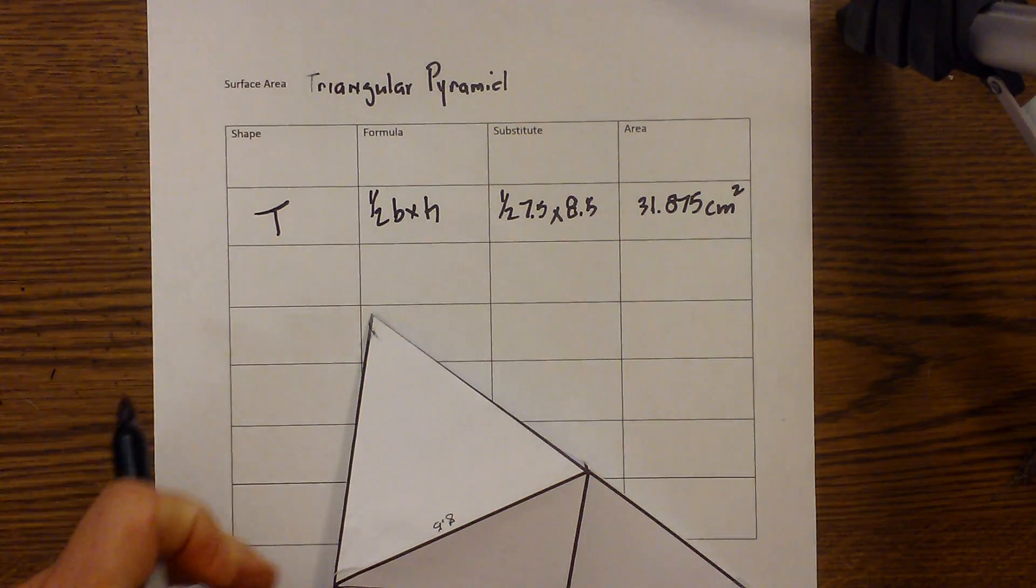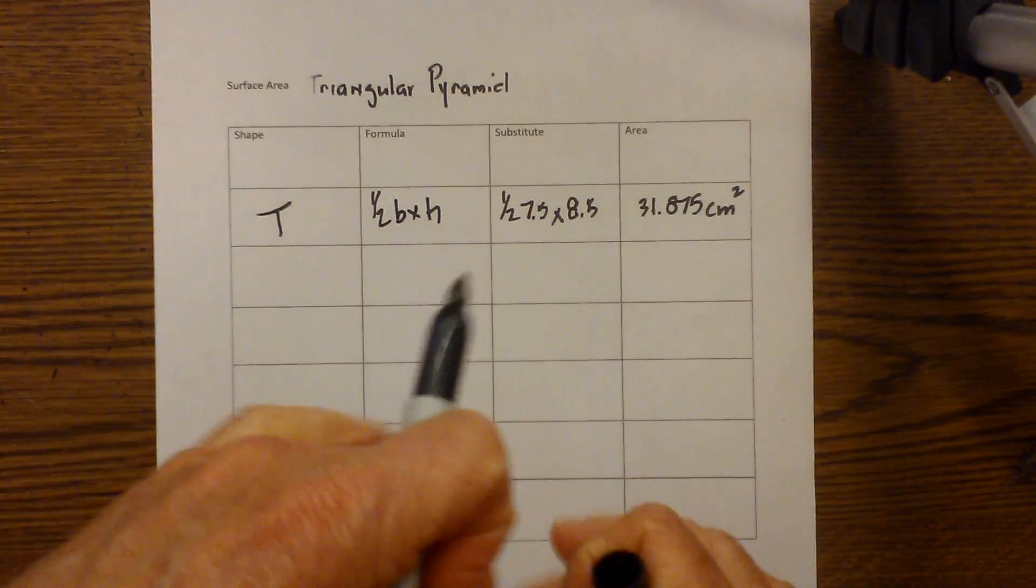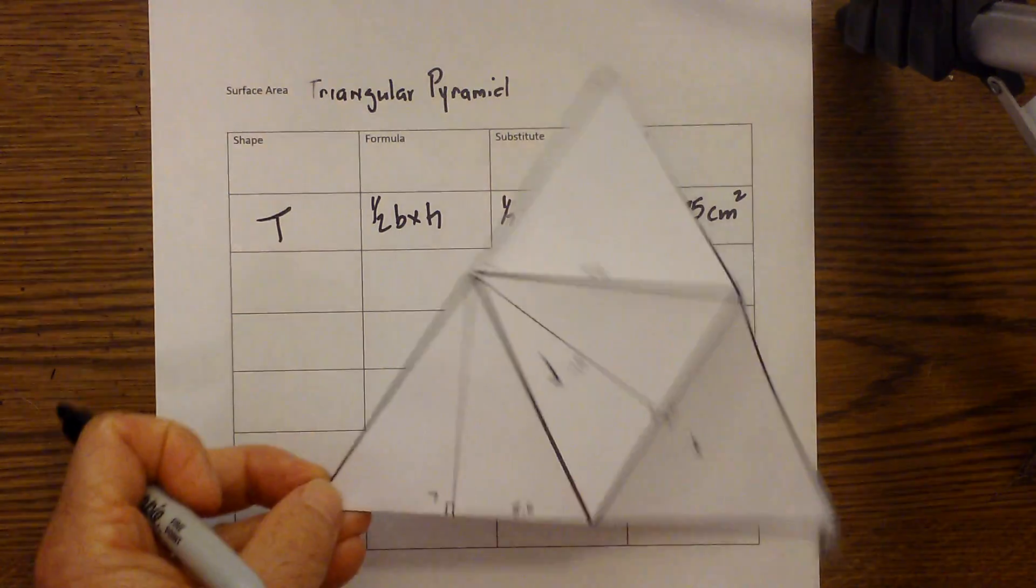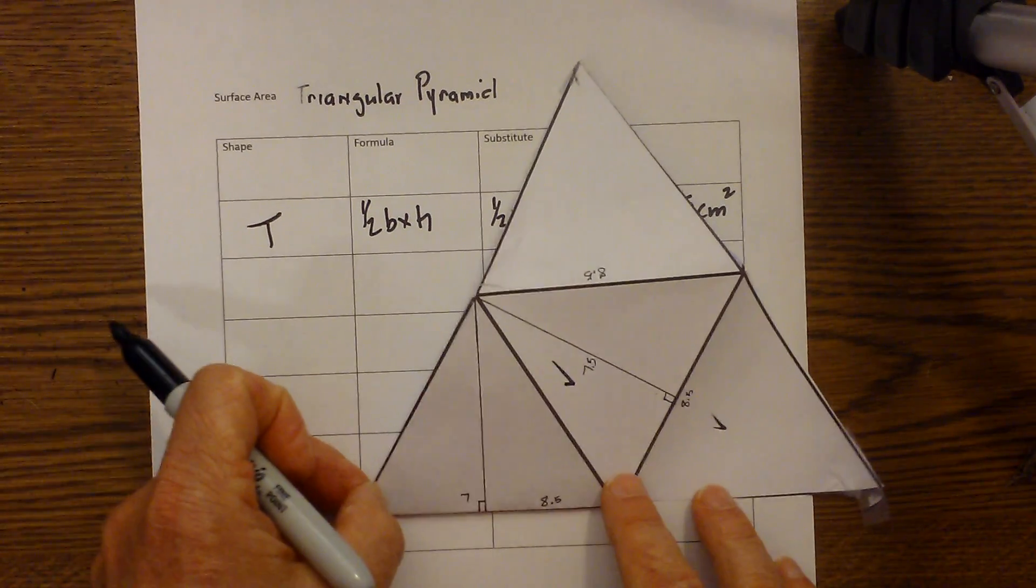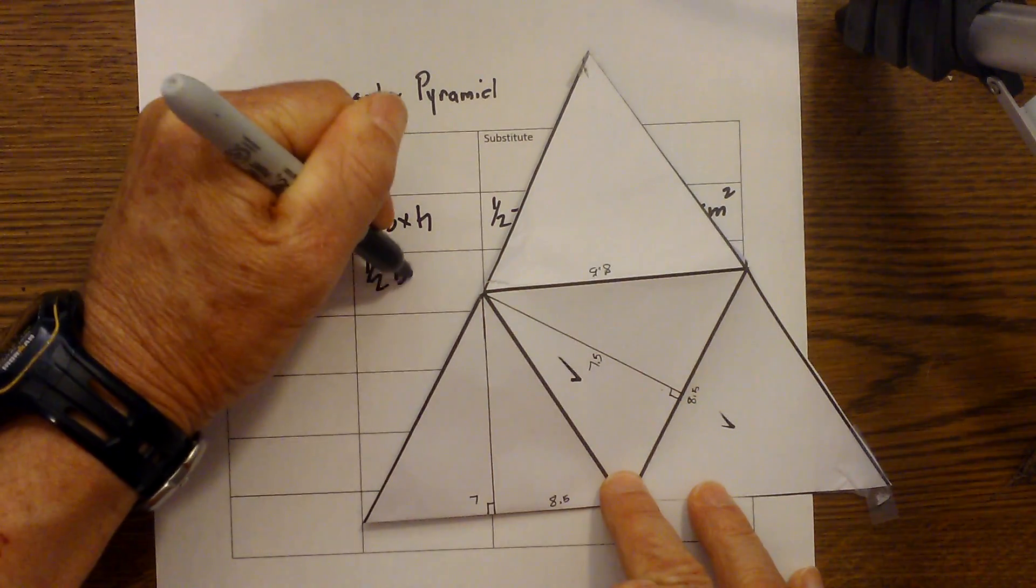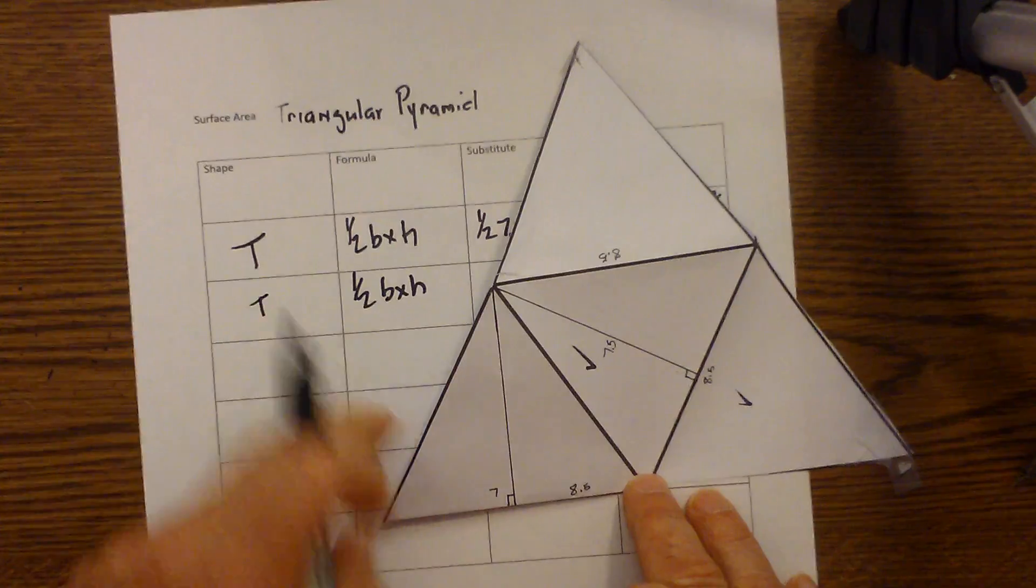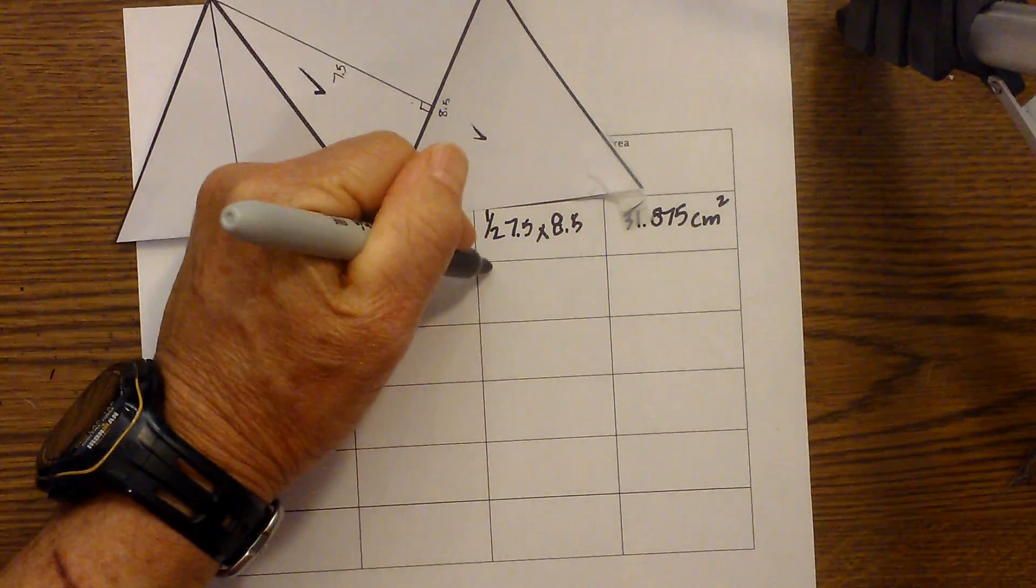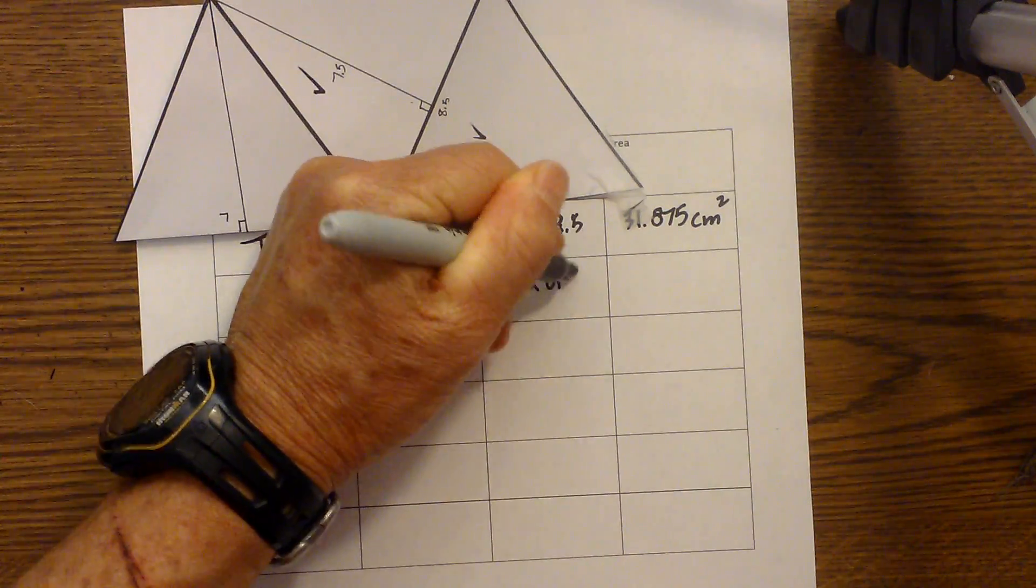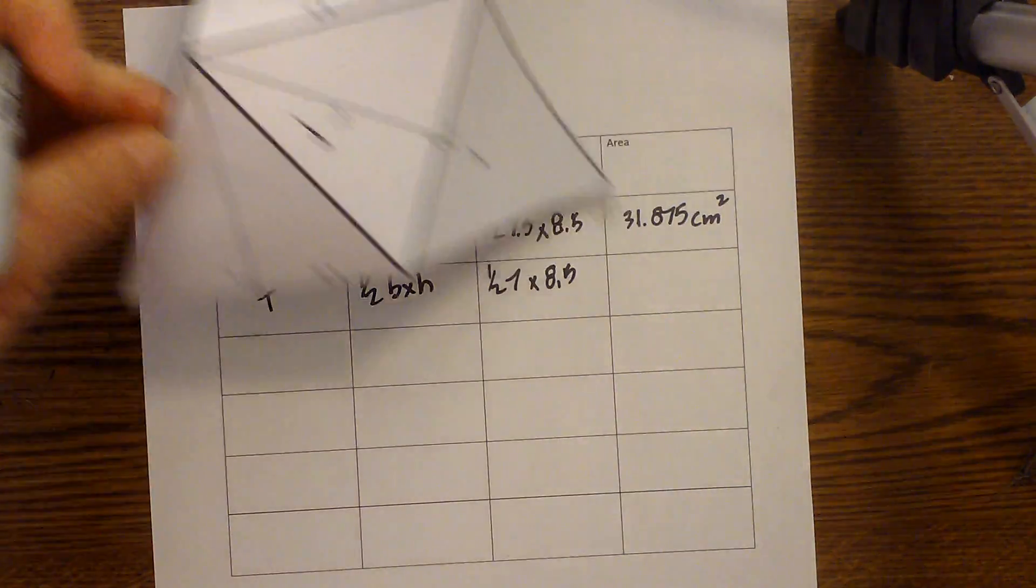So now I have one done. Let's work on the triangles around the perimeter, and they're all going to be equal. I have a triangle, one half base times height is the formula. If you look carefully, the height was 7 centimeters, and the base again is 8.5.